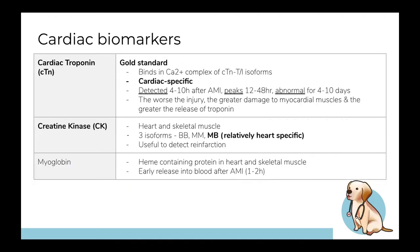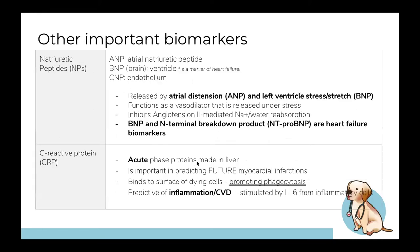Troponin is measured four to ten hours after an MI and peaks around the 12 to 48-hour mark. Importantly, troponin elevation correlates with the size of the infarct — a bigger infarct means a much larger troponin release. CK (creatine kinase) is another biomarker; the MB isoform is most specific to cardiac tissue. It has a short half-life, so it's not commonly used, but it's useful for detecting re-infarction. Natriuretic peptides are released by atrial distension and the left ventricle in response to stress. C-reactive protein is non-specific, being a general inflammatory marker.